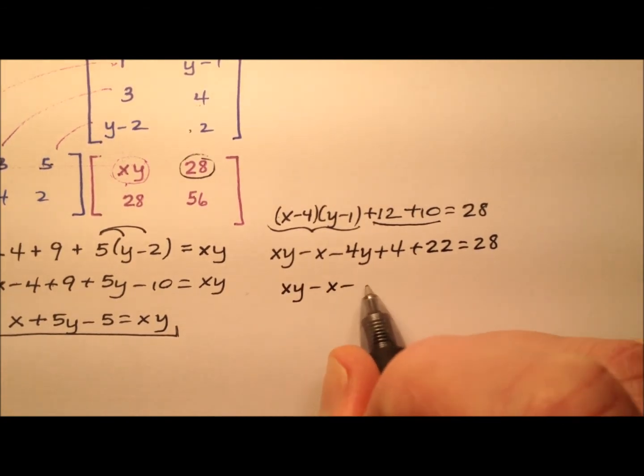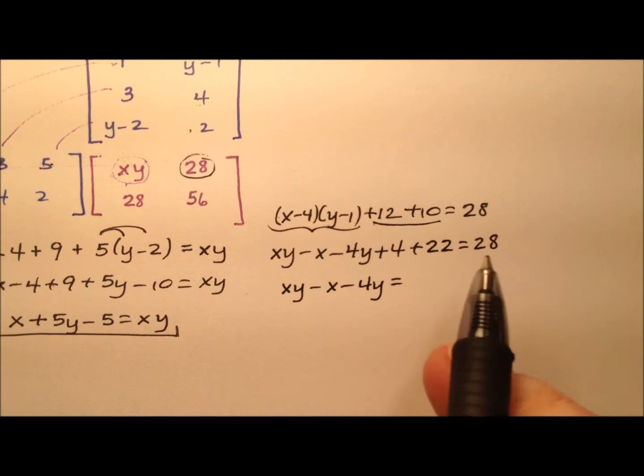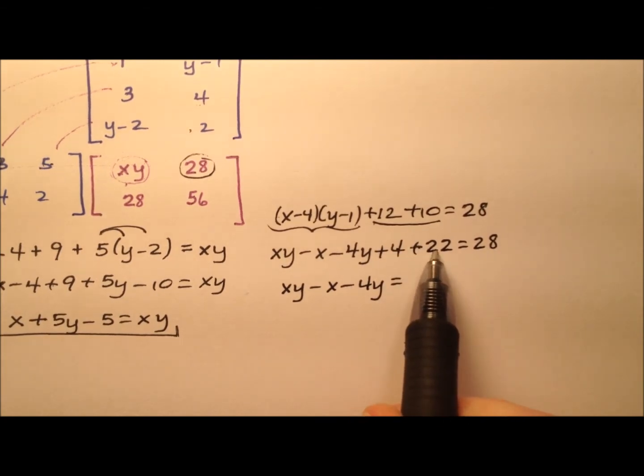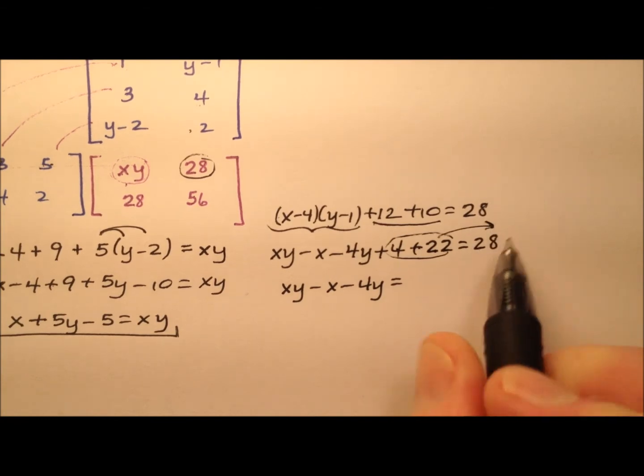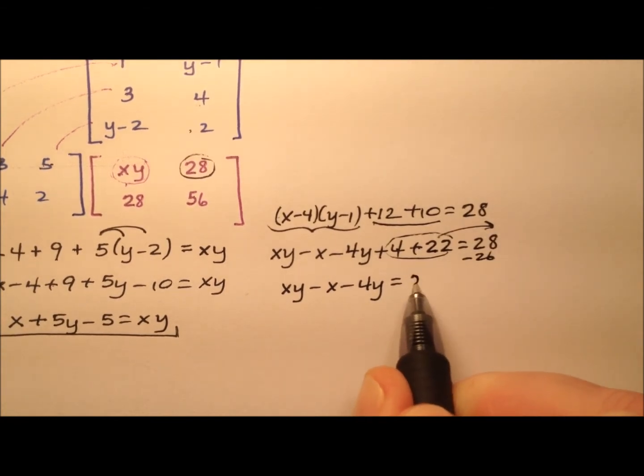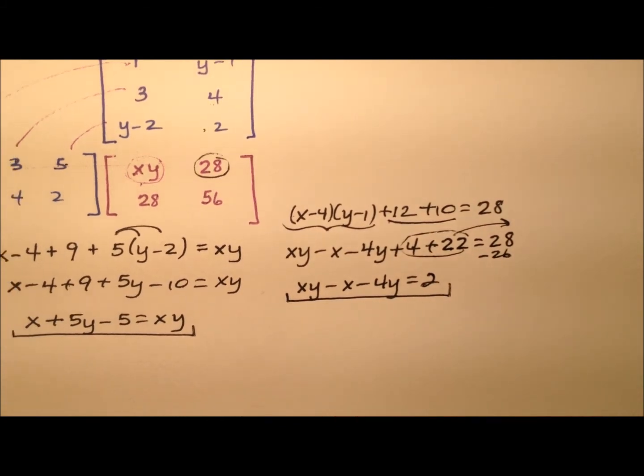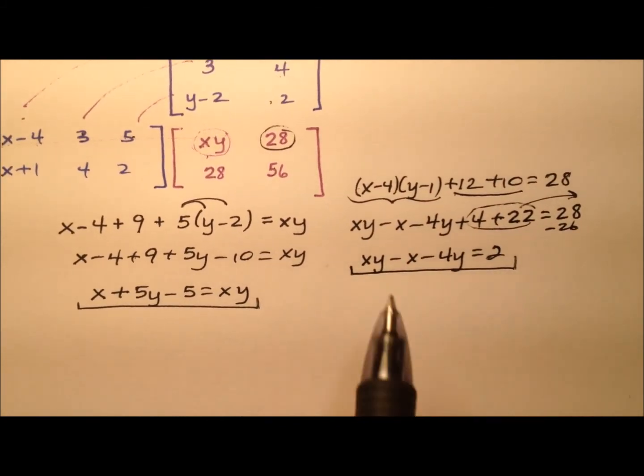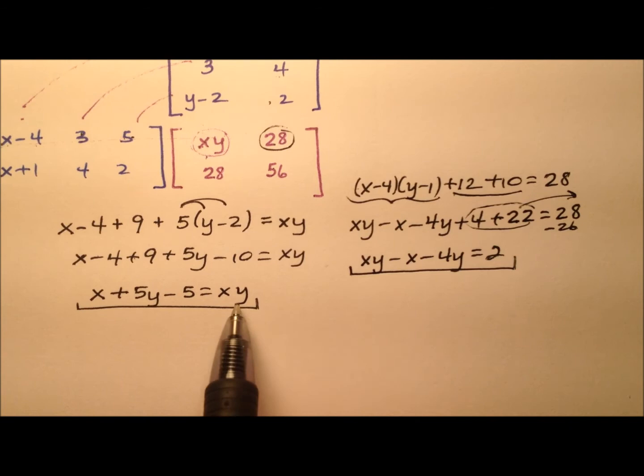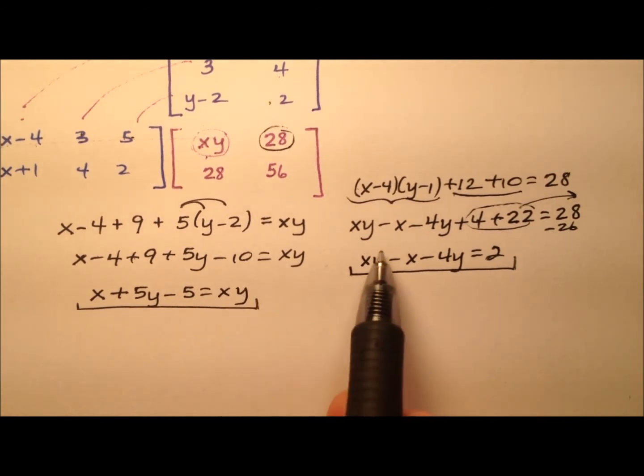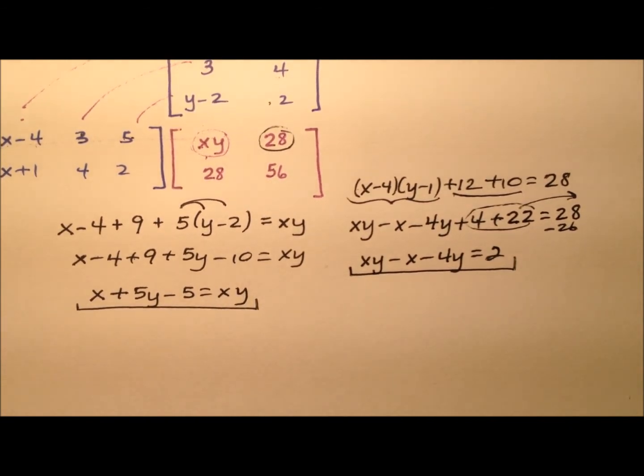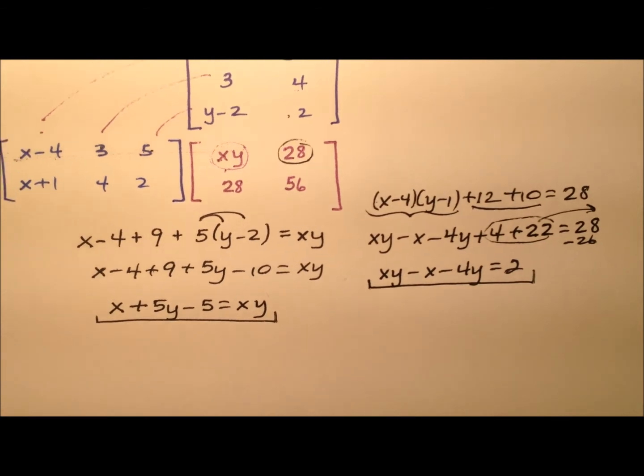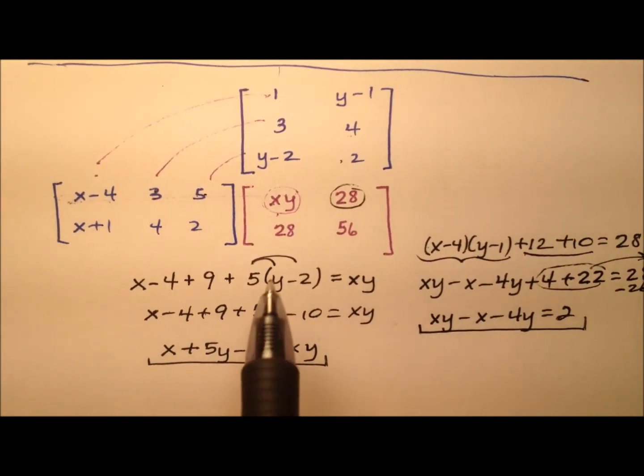So simplifying this a little, xy-x-4y equals, and 4+22 is 26, it's positive on the left side, so I'll move it over to the right as a -26, and I'll get a 2. Well that guy seems like an important equation also, and you'll notice that both of these equations have an xy term in there, which probably is going to come in handy for us.